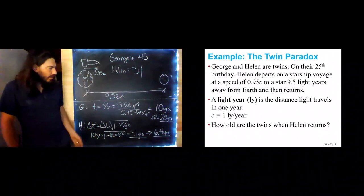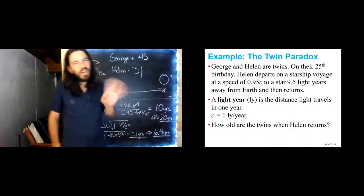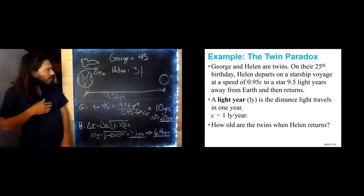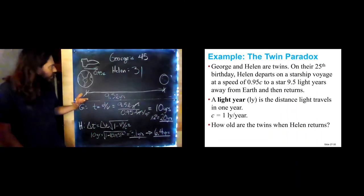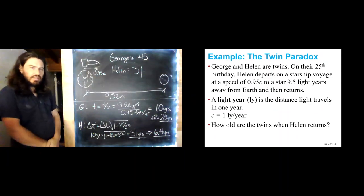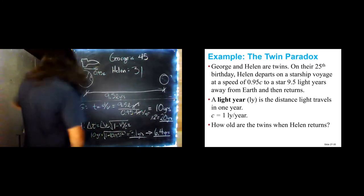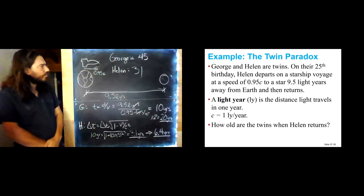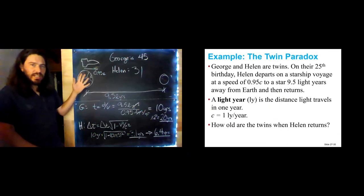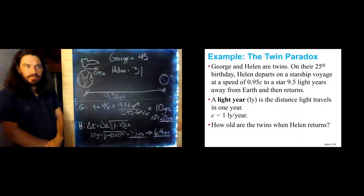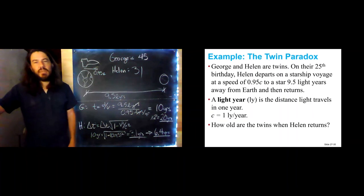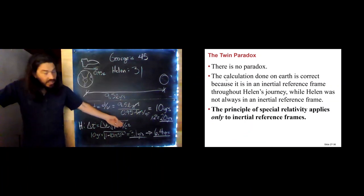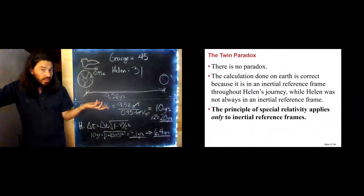It's reality — time moves differently according to whether you're moving. What's the paradox? Well, you might say 20 doesn't equal 6.4 — but that's not the paradox, it's just very surprising. You could also argue that since all motion is relative, Helen was at rest and George went 9.5 light years away and back — that perspective would make George younger. But that's not a paradox either. This is called the twin paradox but there really is no paradox.